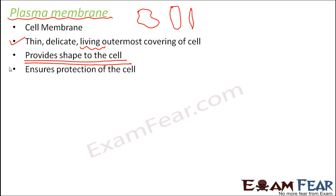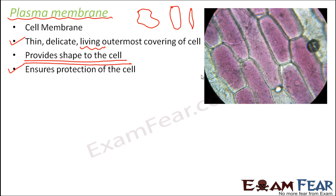The cell membrane ensures protection because as the boundary, it will not allow any particle to enter inside the cell freely — it will selectively allow only the necessary particles to get inside. This cell membrane keeps each cell distinct and intact from other cells, separating all cells from each other.